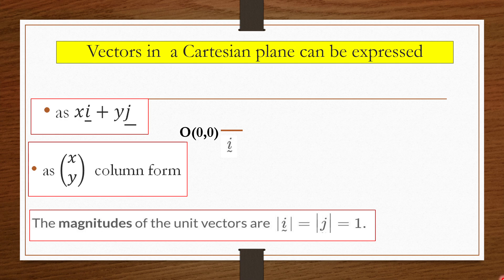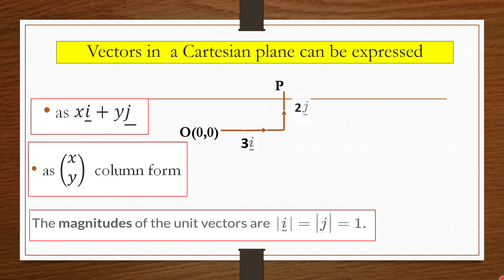For example, starting from the origin and going 3 units to the right gives 3i. Going up 2 units gives 2j. The resultant vector from point O to point P can be written as OP equals 3i plus 2j.